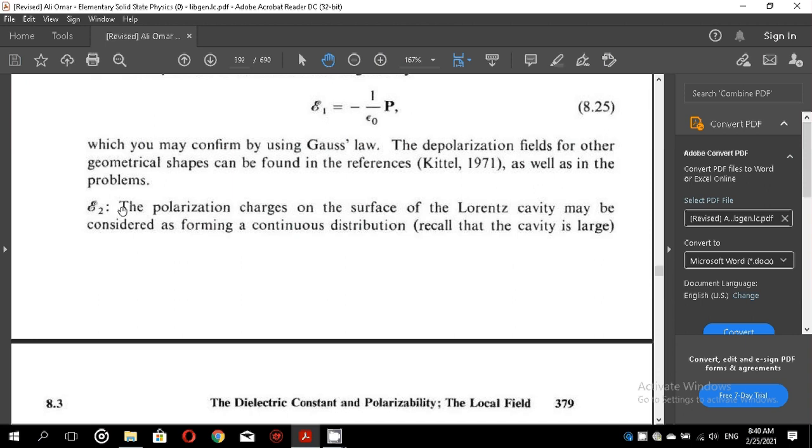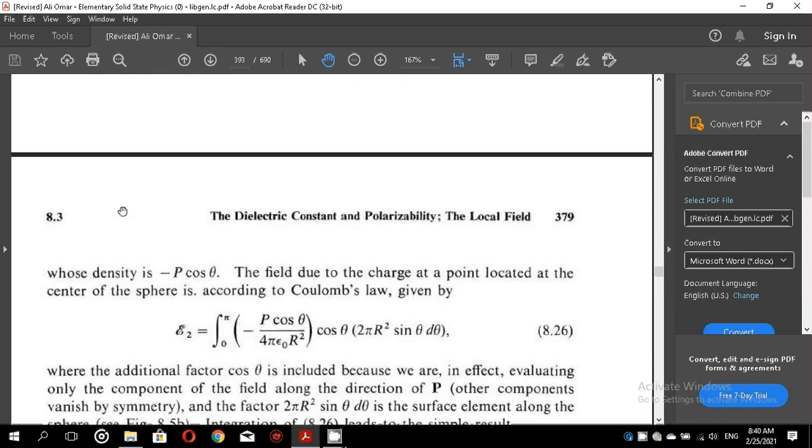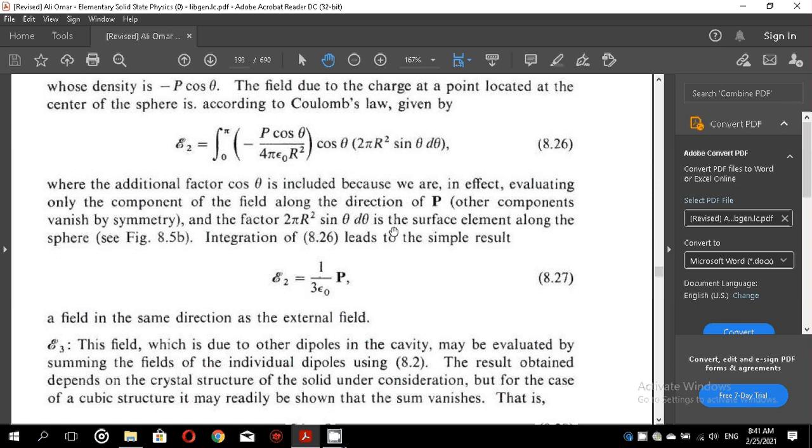The field E2, the polarization charges on the surface of the Lorentz cavity may be considered as forming a continuous distribution. Recall that the cavity is larger, whose density is minus p cos theta. The field due to charges at the point located at the center of the sphere is, according to Coulomb's law given by this expression, E2 equals integral equation 8.26. You must try to understand the contents of this equation, where the additional factor cos theta is included because we are in effect evaluating only the component of the field along the direction of p. Other components vanish by symmetry. The factor 2 pi r square sine theta d theta is the surface element along the sphere, see figure 8.5 b.